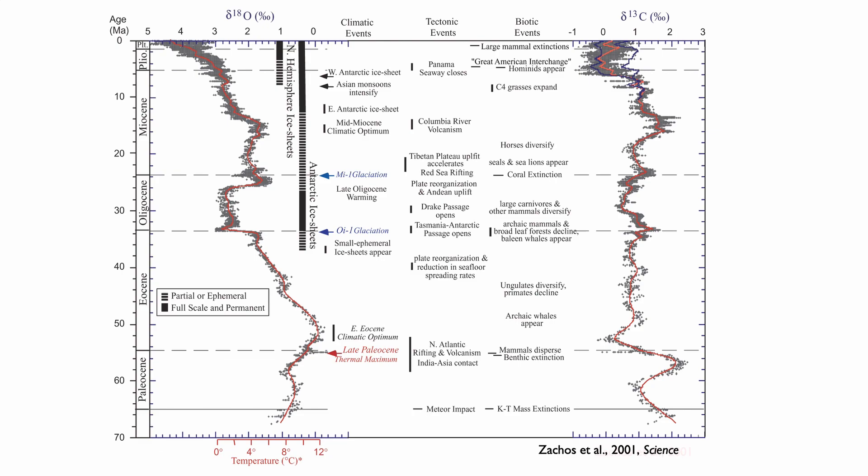Looking at oxygen isotopes over the last 65 million years: during the Eocene, we have broadly light oxygen isotopes in the benthic record, because the ocean was very warm. This warmth is followed by cooling — oxygen isotopes shifting to higher values. That cooling is very well expressed at the beginning of the Oligocene, where we have the OI1 glaciation — a massive shift in oxygen isotopes that happens worldwide and is therefore a very good isotopic and time marker.